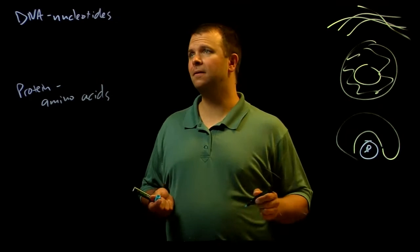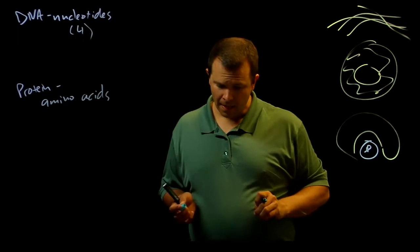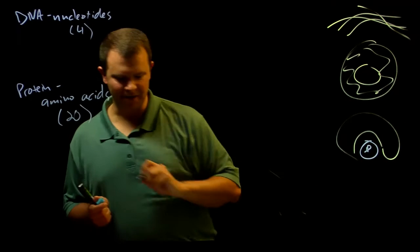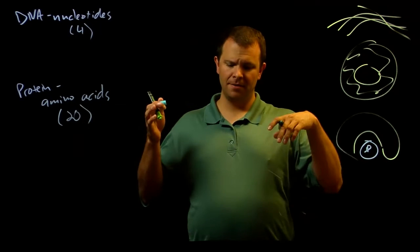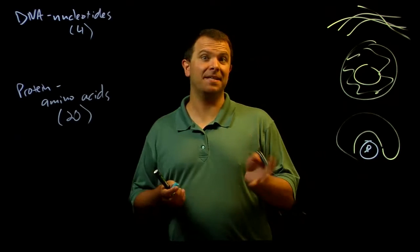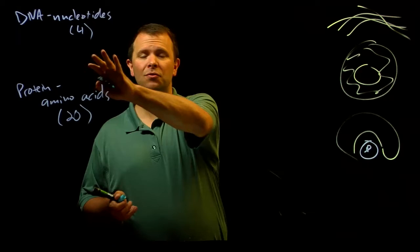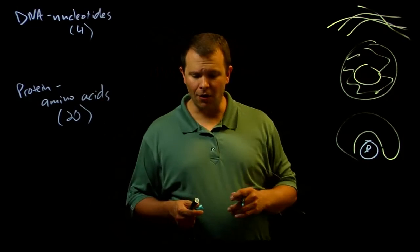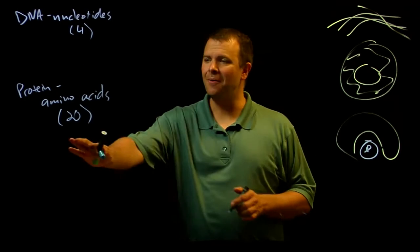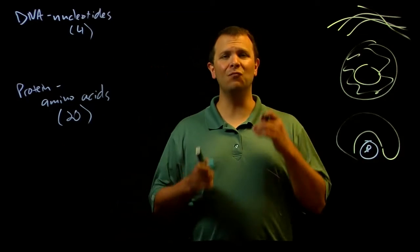However, while there are only four nucleotides, there are 20 different amino acids in most of the proteins on Earth. Occasionally, you will find an exotic one here and there. And finally, while the nucleotides in DNA are all fairly similar chemically, the amino acid side chains in these 20 different amino acids are really diverse.